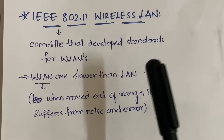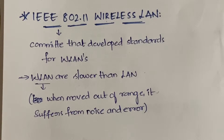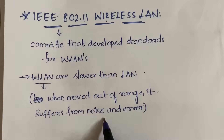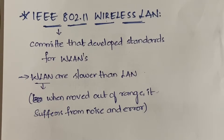Wireless LANs are slower than normal wired LANs. Also, if a device is moved out of range it suffers from noise and errors. For example, with AirPods — if your phone is in the same room they work fine, but if you walk to the far end of a balcony, disturbance starts and eventually they disconnect completely. That's how any wireless device works.